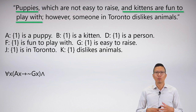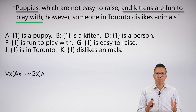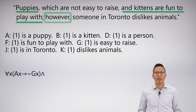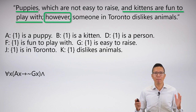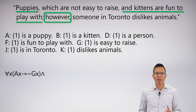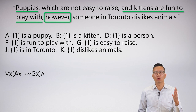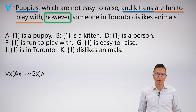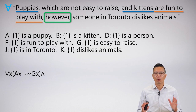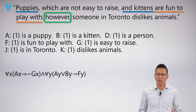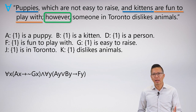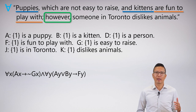I'm going to symbolize piece by piece, ignoring 'however' for now, and symbolize 'puppies and kittens are fun to play with.' The group is puppies and kittens, and the property is fun to play with. This is a universal — and of course, be careful: this is the cat-dog example. I don't mean something that's a puppy and a kitten at the same time, I mean something that's a puppy or a kitten, then it has the property of being fun to play with — so I get: for all Y, (PY ∨ KY) → FY.